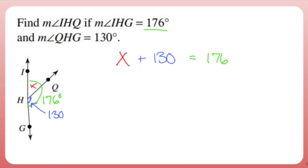All I have to do for this guy is subtract 130 degrees from both sides and X is going to equal 46, my current age.